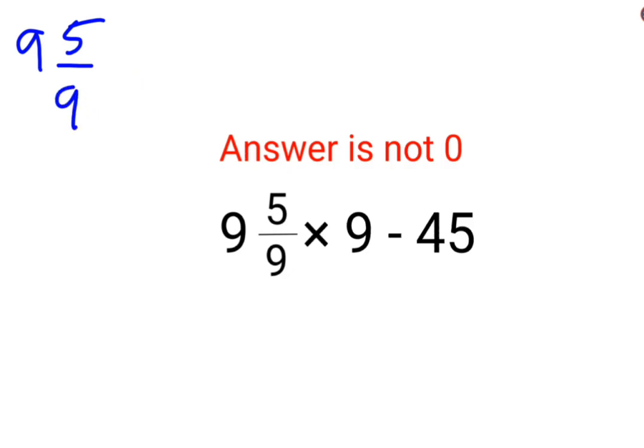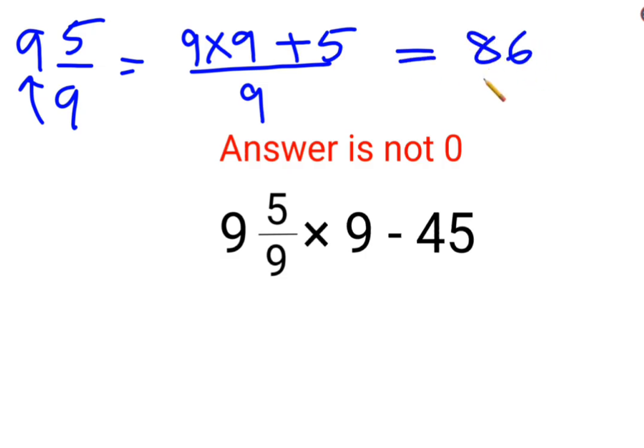So this when converted into its improper form, you will write 9 as it is. The denominator remains the same. But in your numerator, what happens is the denominator gets multiplied to the integer part which is 9 multiplied by 9, and this product is added to the numerator. So this then comes out to be 86 upon 9.